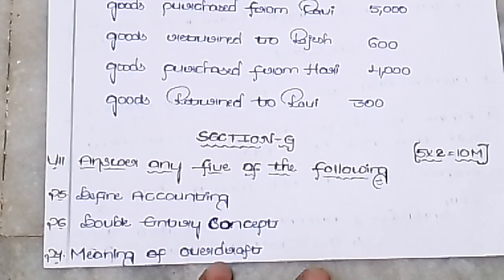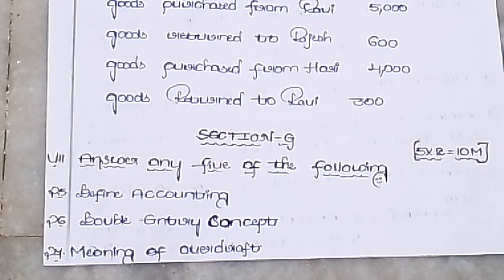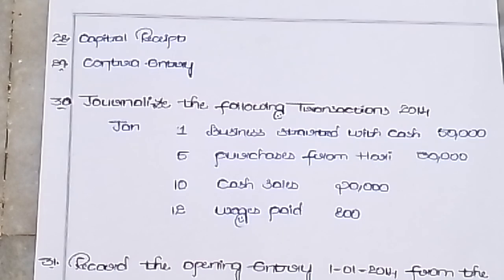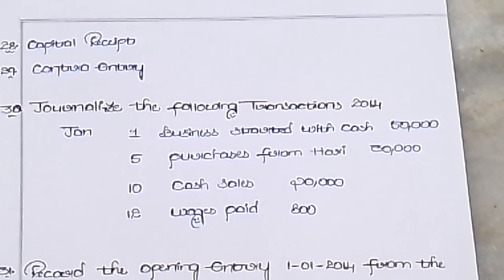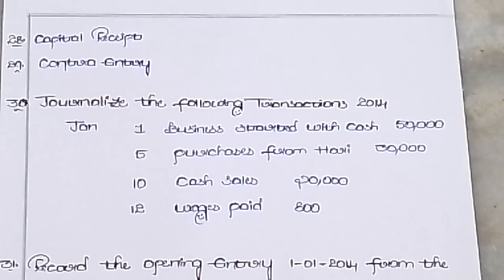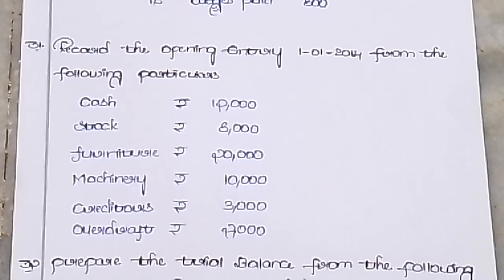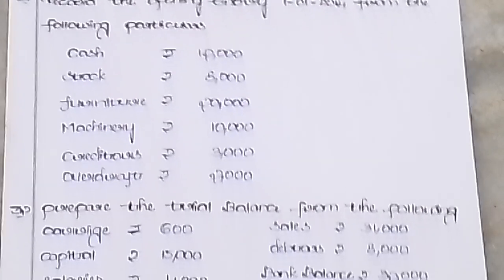Two-mark questions: define accounting, double entry concept, meaning of overhead, capital receipt, contra entry. Journalize the following: foreign trade business started with cash 50,000; purchases from Harry; cash sales; wages spent; general interest. Opening entry: cash 12,000; stock 8,000; furniture 20,000; machinery 10,000; creditors 3,000; loan 2,000. Prepare trial balance.